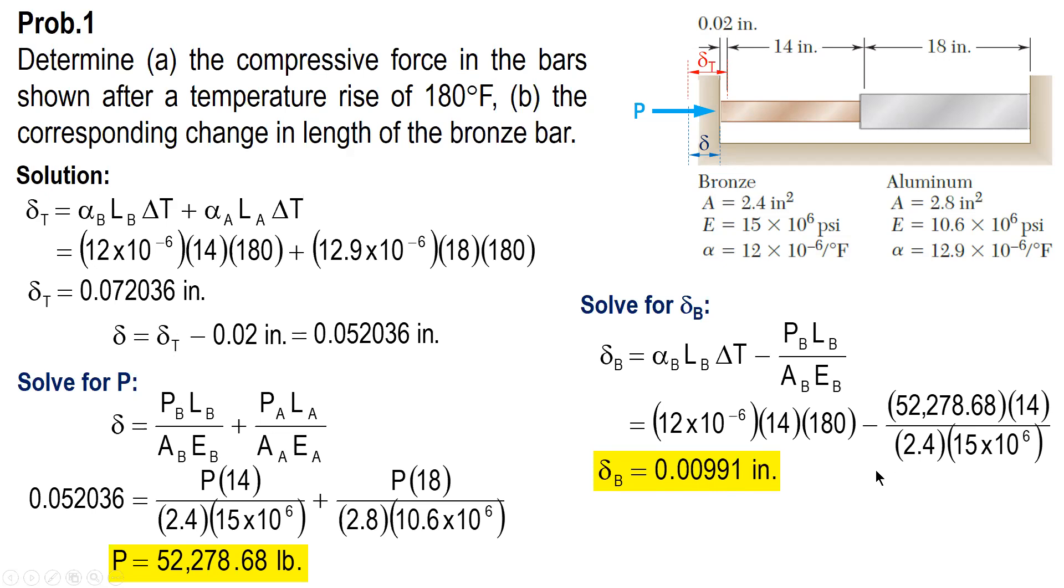And again, if you will do the same for aluminum, you will get a value. If the value is added to this one, the total would be 0.02. That will be your checking to check if your analysis is correct. So, that's it. I hope that you have learned something from this video. Thank you for watching.